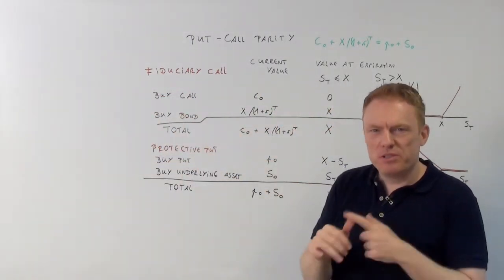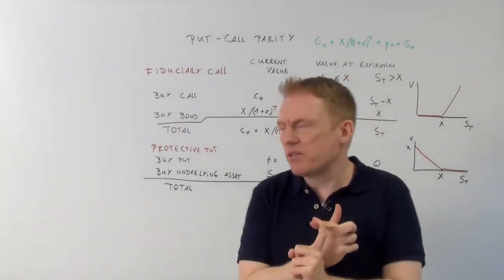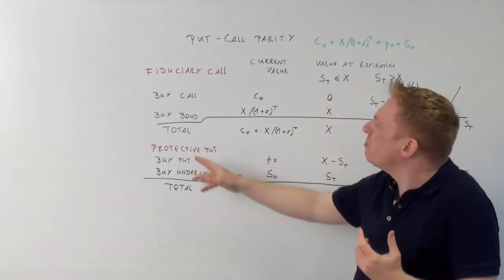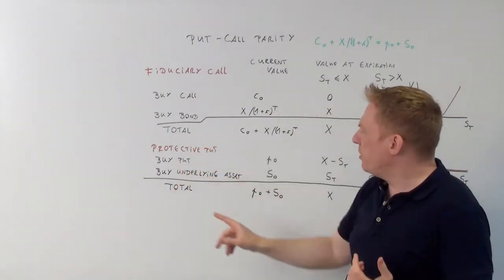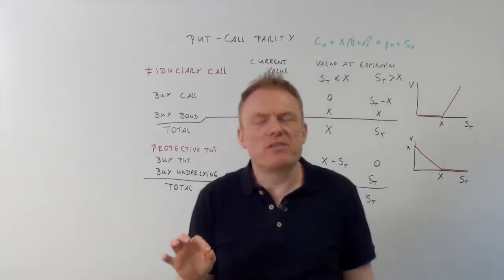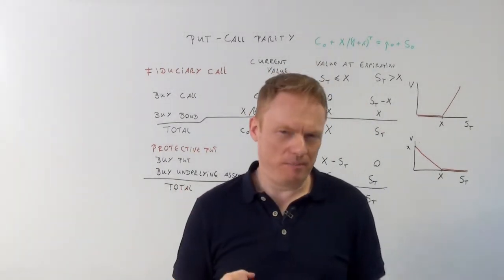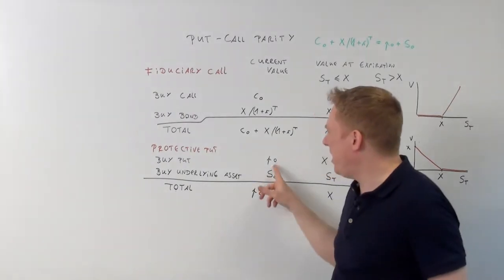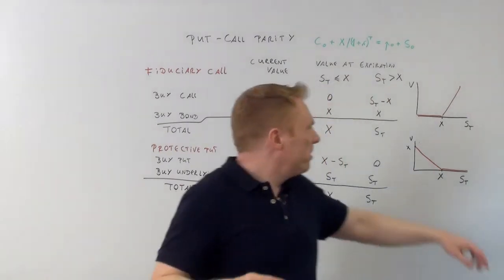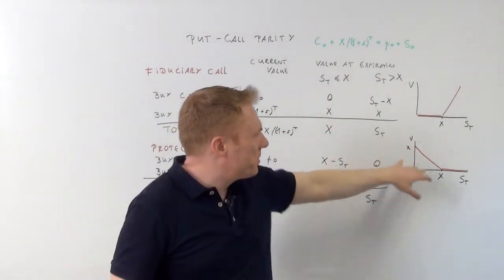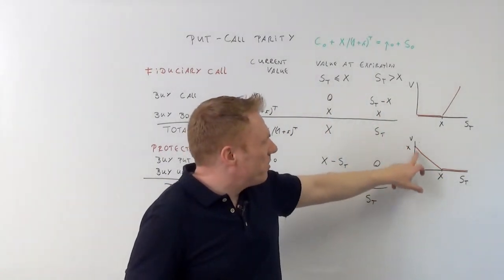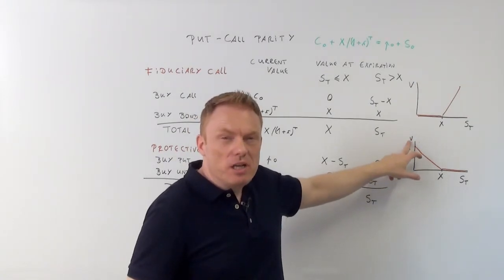Put-call parity does not depend only on fiduciary call — it also depends on protective put. With protective put, we buy a put and have to pay P sub-zero. Buying a put means we buy the right to sell the underlying; that's why we pay P sub-zero. I indicated the value of this long put — the line indicating the value of the long put.